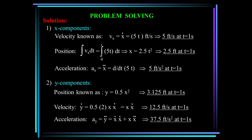The velocity v_x equals 5t, so at t equals 1 second, v_x equals 5 feet per second. Integrating, x equals 2.5t squared, so at t equals 1 second, x equals 2.5 feet. The acceleration a_x is the derivative of 5t, which equals 5 feet per second squared — a constant.